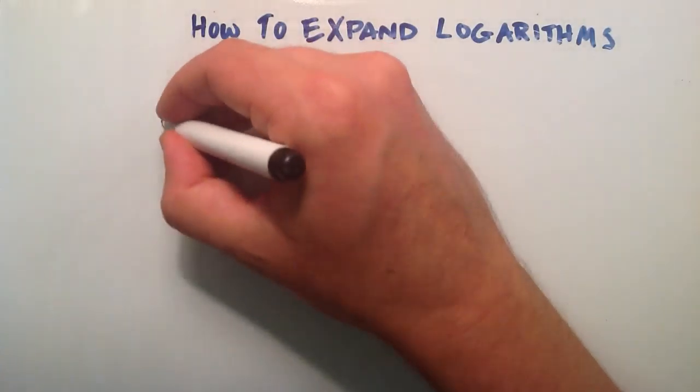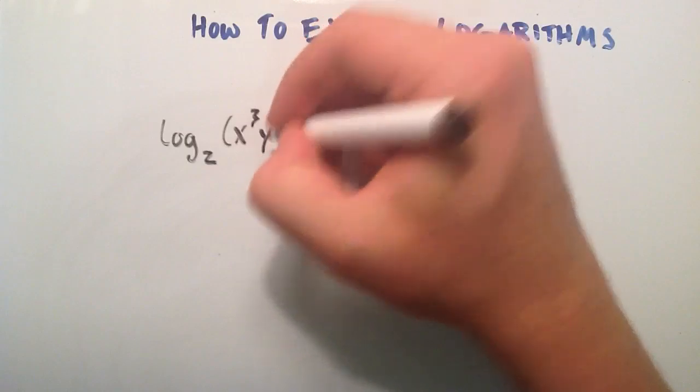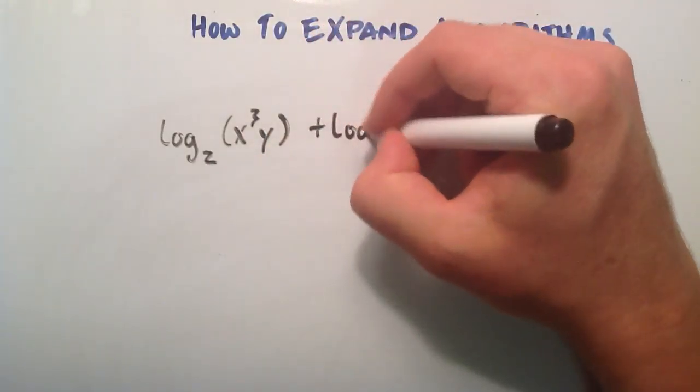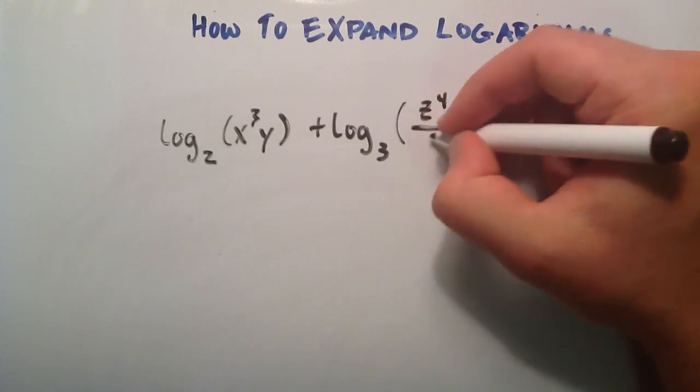So we're going to start with log base 2 of x to the third y plus log base 3 of z to the fourth divided by x.